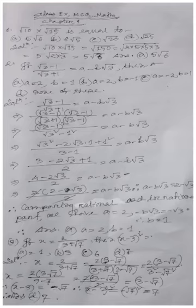We have (√3 − 1)/(√3 + 1) = a − b√3. To solve this, when there are root numbers in the denominator, we rationalize. Since the denominator is (√3 + 1), we multiply by its conjugate (√3 − 1).